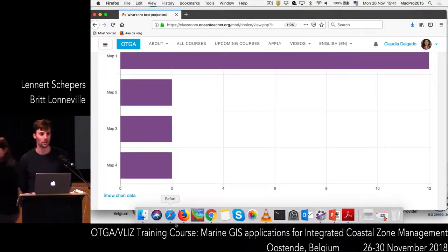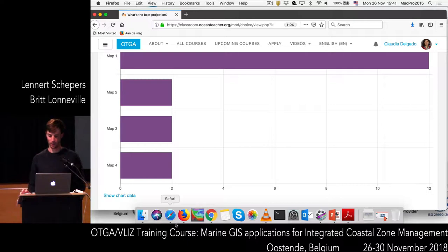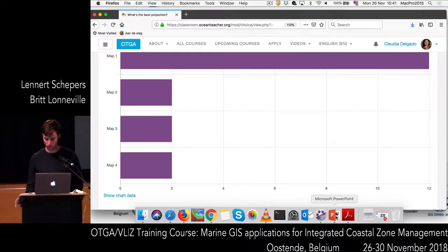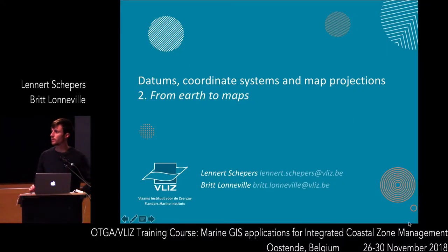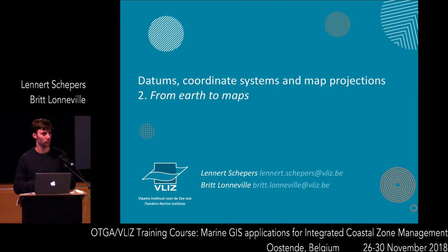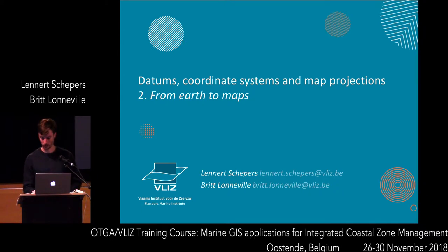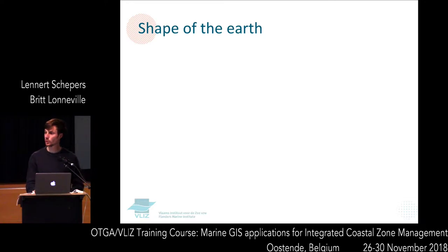Did everybody fill in something? If you still have to do it you can still answer, but I will continue with the next presentation and in the third or fourth presentation we will come back to these results. So if you want to make a map, we first have to convert from the real earth and then convert that to a small piece of paper — a map.